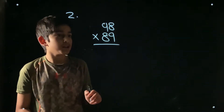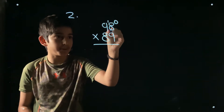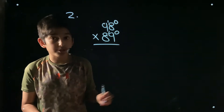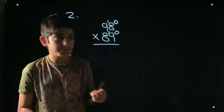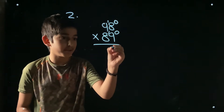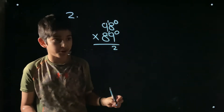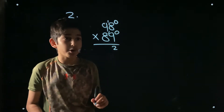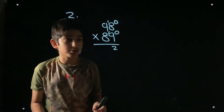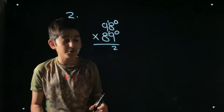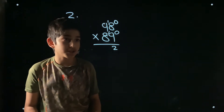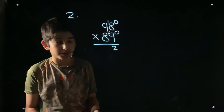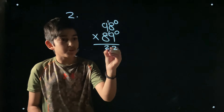One more example: 98 multiplied by 89. Write the position numbers at the top. For position zero: 8 times 9 is 72 — write 2, carry 7. For position one, the cross pairs are 9 times 9 equals 81, and 8 times 8 equals 64. 81 plus 64 is 145, plus the carry of 7 is 152.